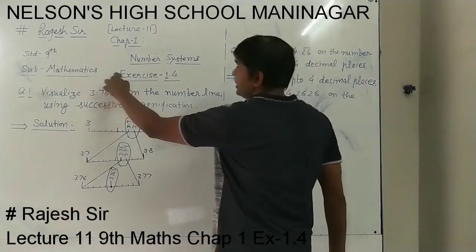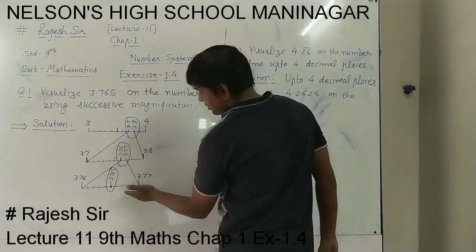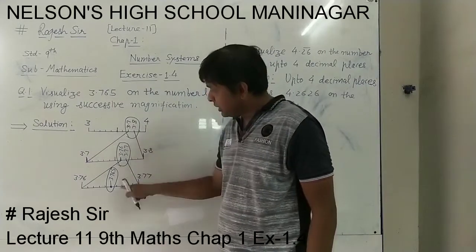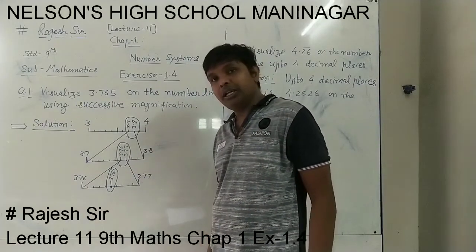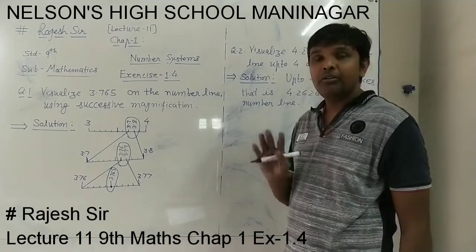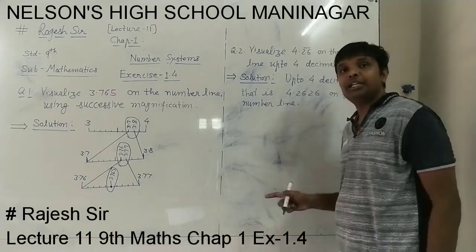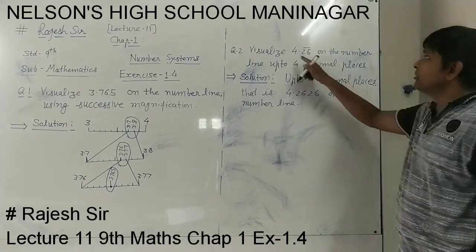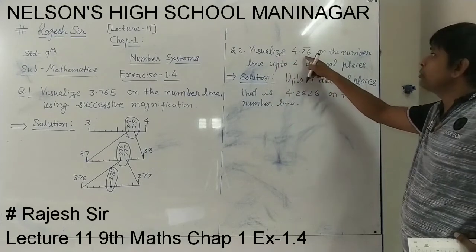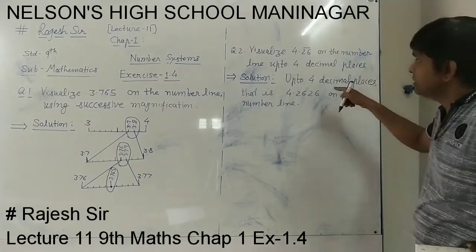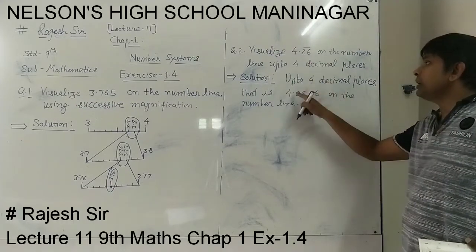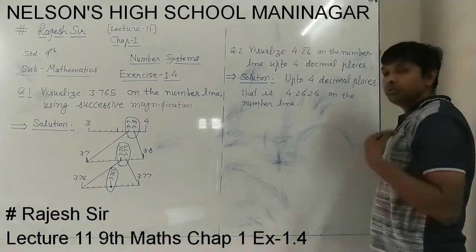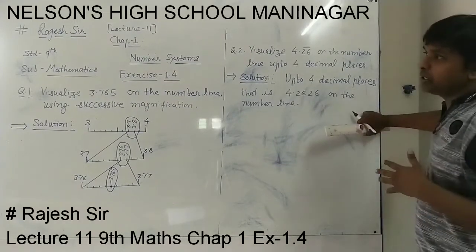So after the decimal point, however many digits you have, that many steps you will need to get your real number on the number line. After the decimal point there are 3 digits, so on the third step you get your number. In the previous example 11 there were 5 decimal digits, so on the fifth step you got your number. Here for question 2, visualize 4.26 bar on the number line up to 4 decimal places, meaning 4.2626, so after the decimal point 4 digits means 4 steps.